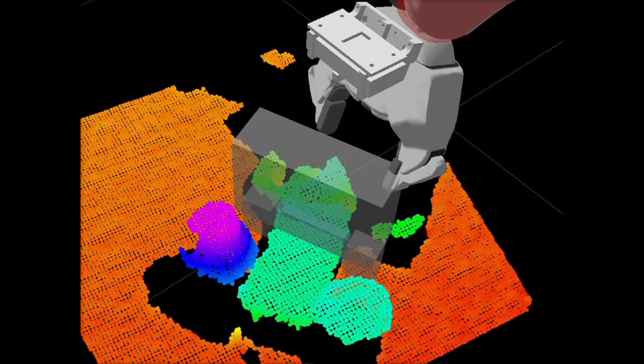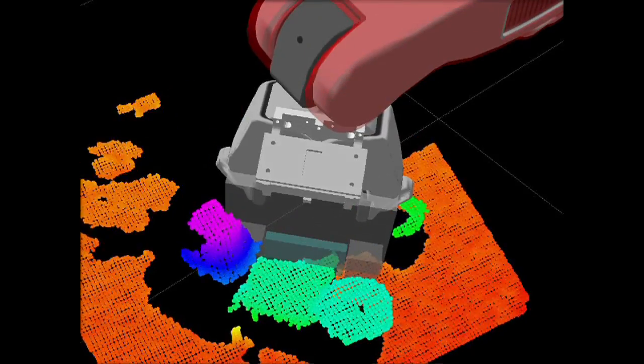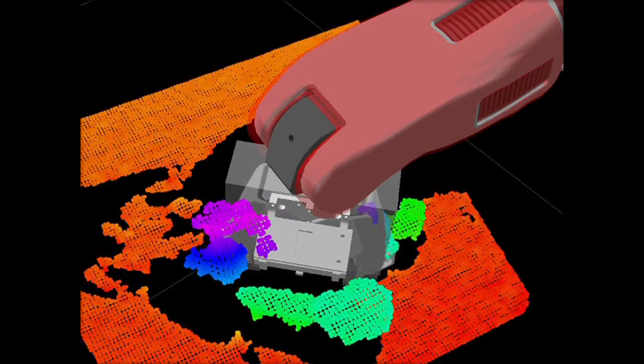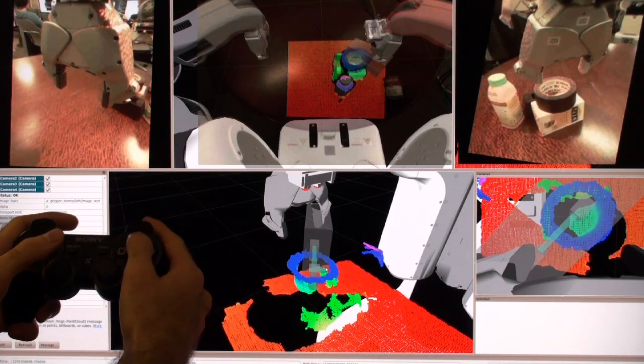Also, even while using teleoperation, our grasp adjustment software can suggest different grasps to the user. We use the power of RViz to show camera and sensor data and to indicate what is currently being controlled.